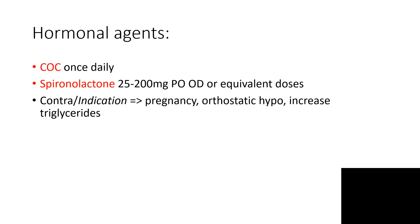Hormonal agents: combined oral contraceptives once daily — we've chosen Diane-35 for this purpose. Spironolactone 25 mg once daily or equivalent doses. Spironolactone is contraindicated in pregnancy, just like combined hormonal contraceptive agents. It is also contraindicated in ascites because it will draw fluid out, which the patient needs for control. And it increases triglycerides, so do not use it in patients with elevated triglycerides as it will cause serious trouble for the pancreas.